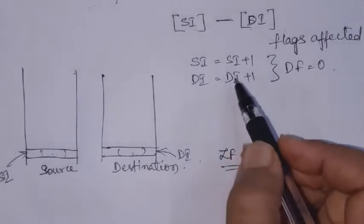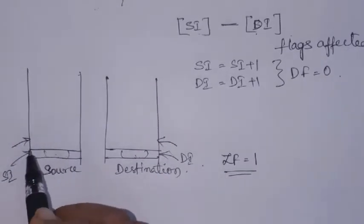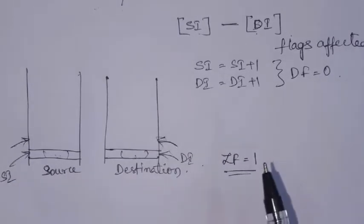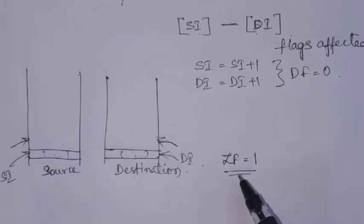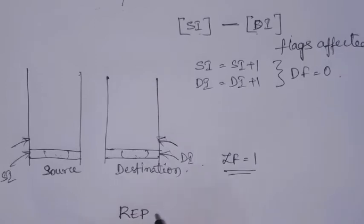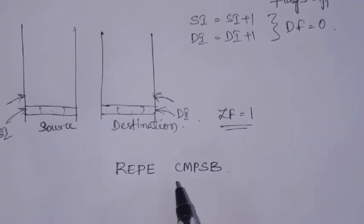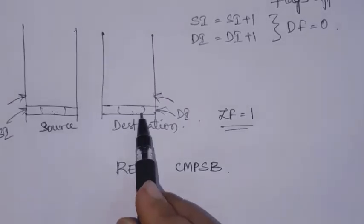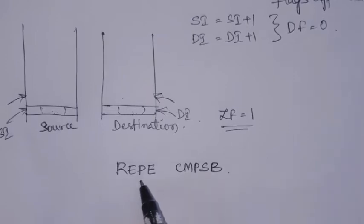After comparison, SI and DI are incremented to point to the next byte — one byte is compared, then it increments and points to the next byte. If this instruction is prefixed with the REPEAT instruction, it is repeated till the condition is satisfied. Generally we use REPE CMPSB — Repeat If Equal, Compare String Byte. This compare string byte is repeated till the bytes are equal; once it finds any byte which is not equal, it comes out of the loop.